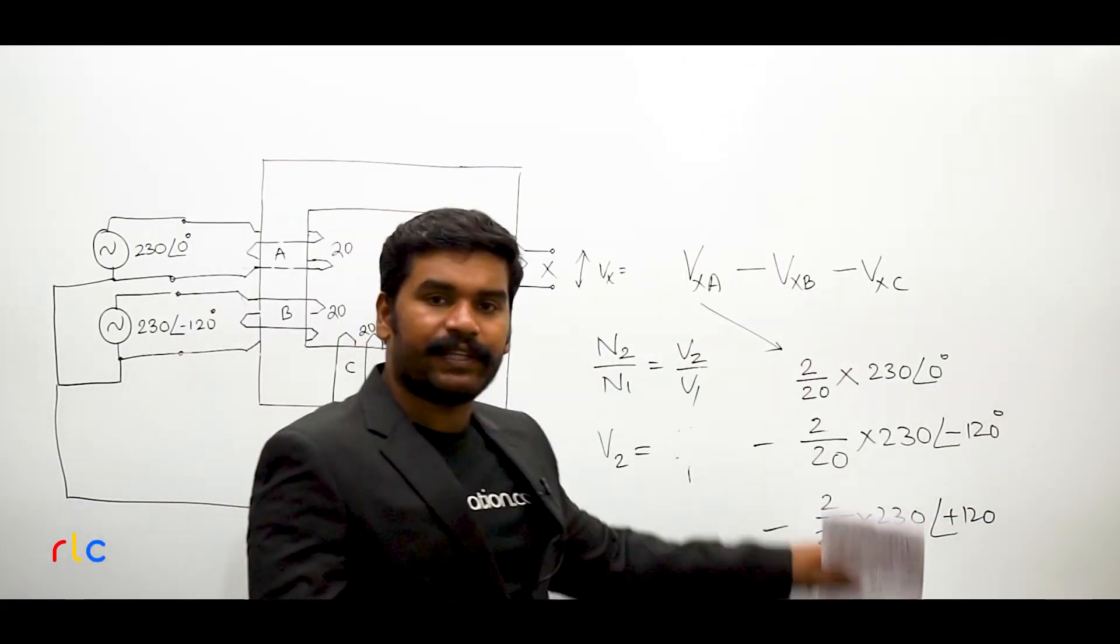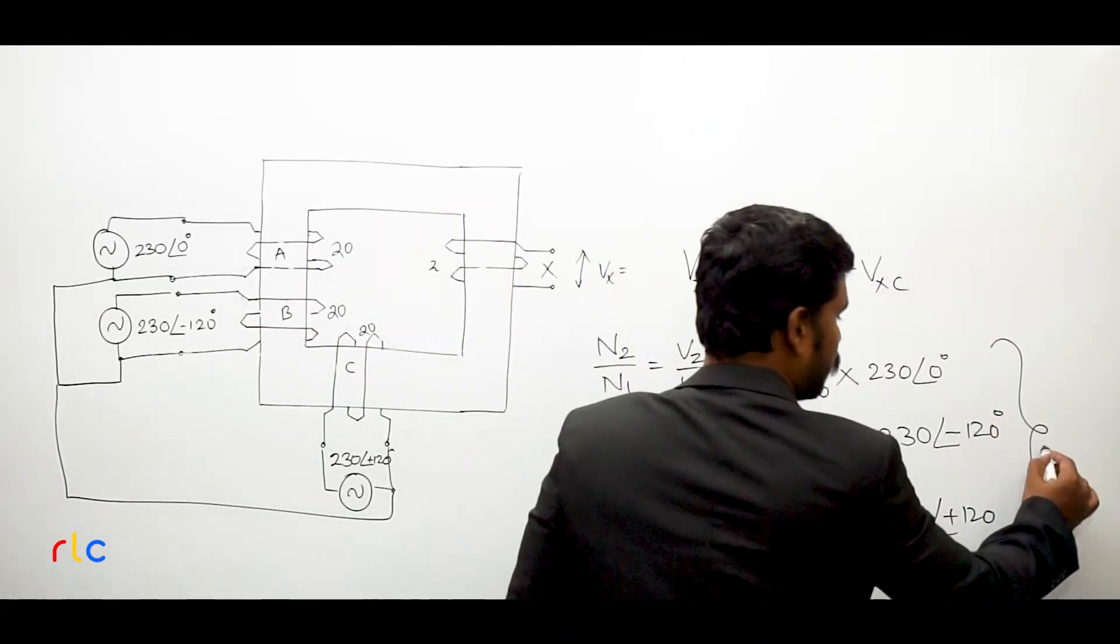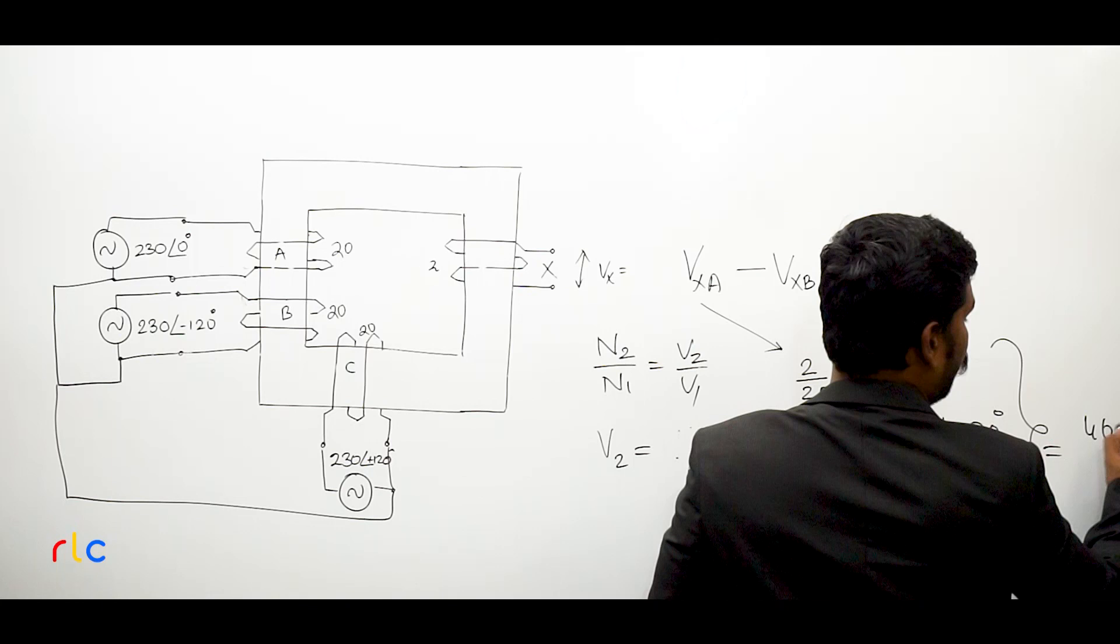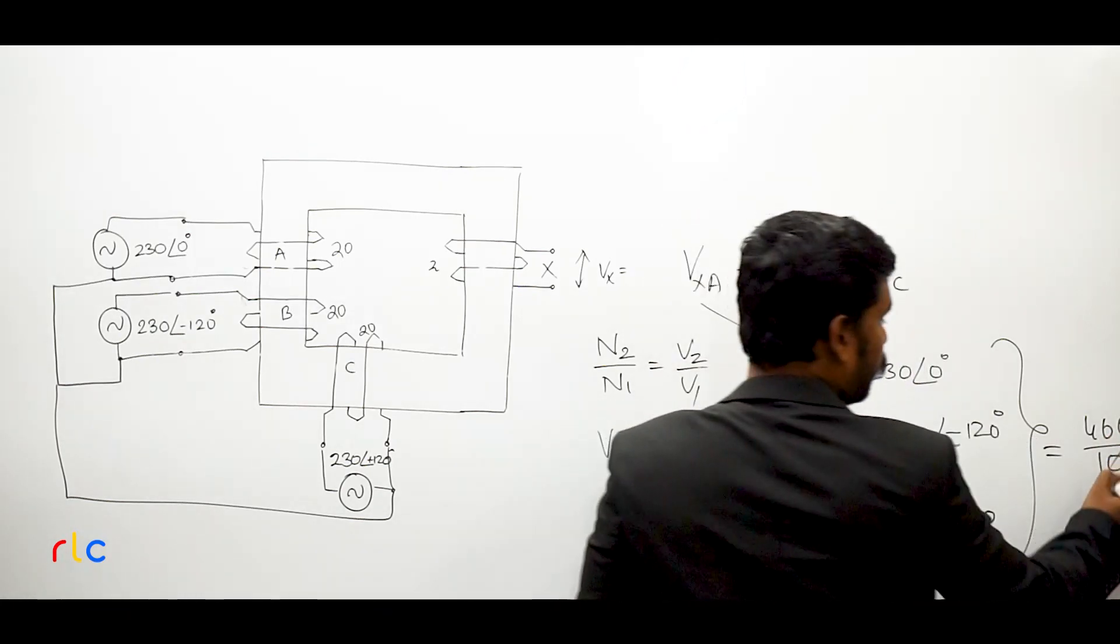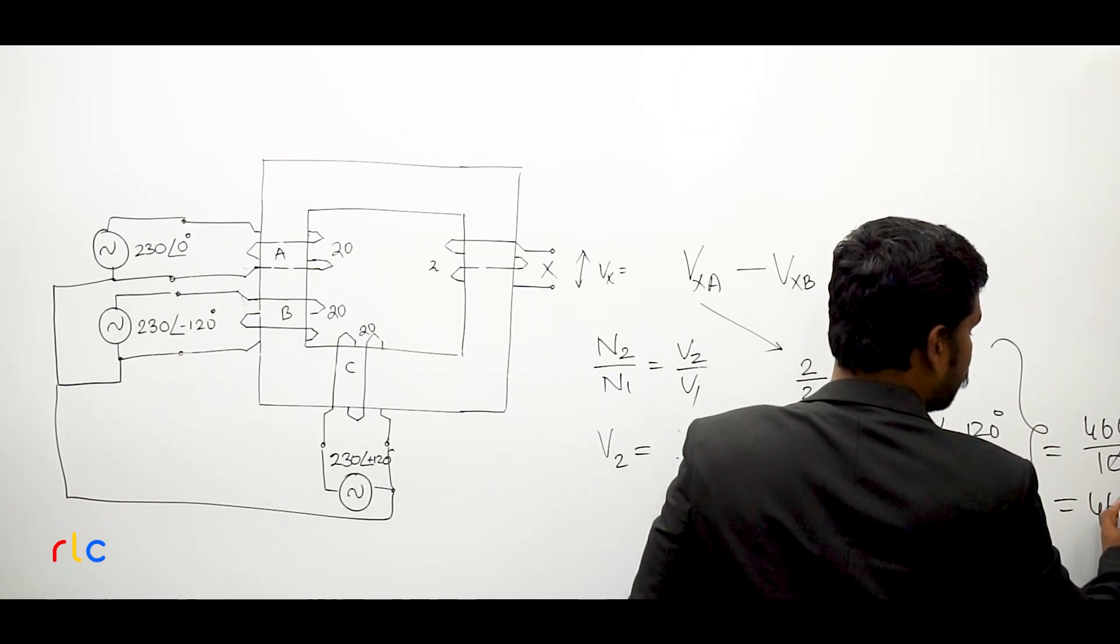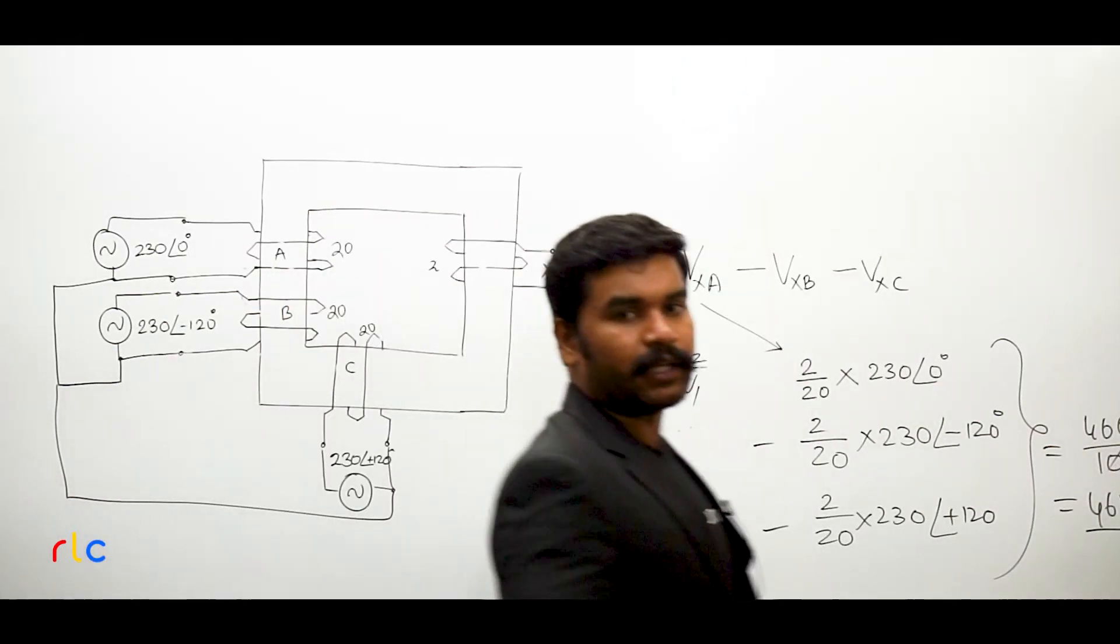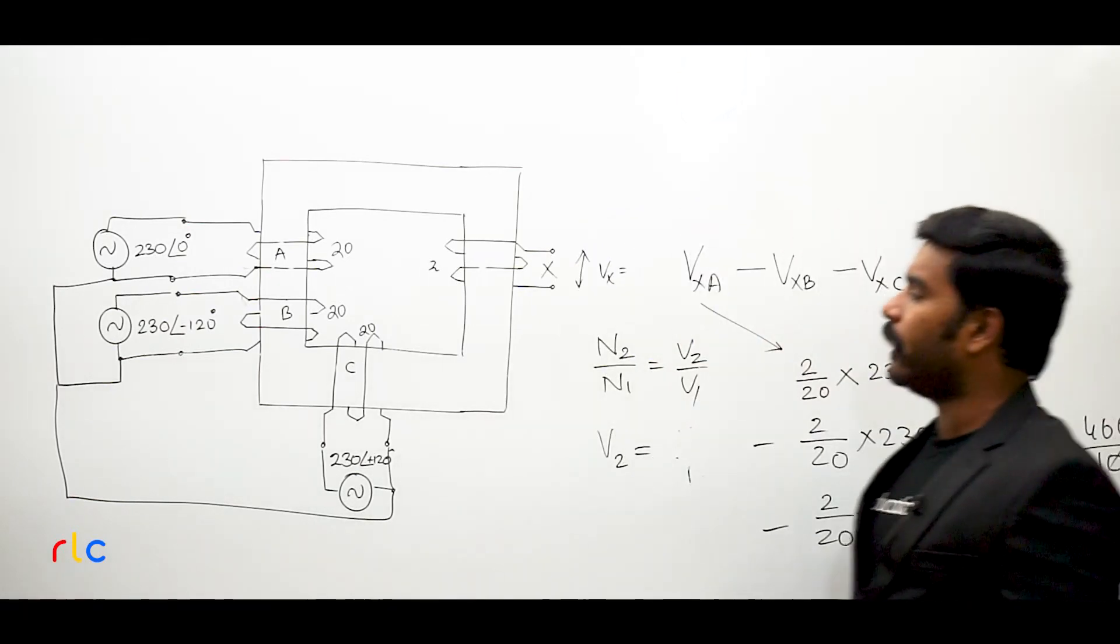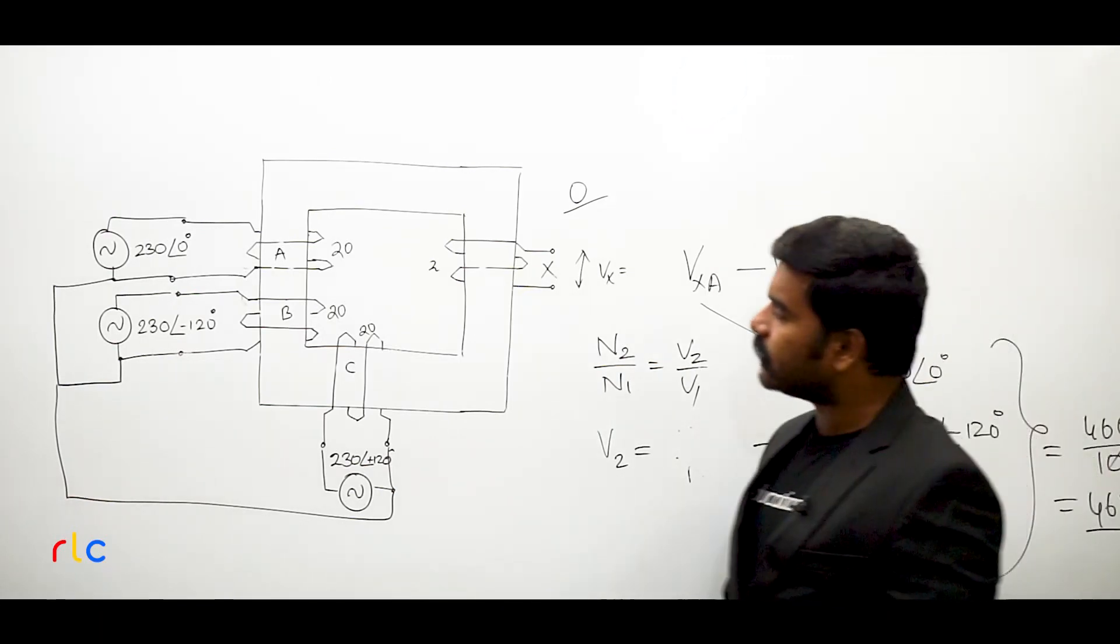After you solve this entirely, you will be getting an answer equal to 460 by 10 at angle 0 degrees. So your answer is going to be directly 46 volts. Most of the people might have given the answer to this question as 0 volts. That would not be the answer.